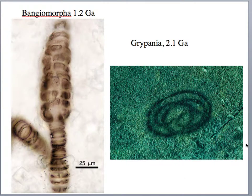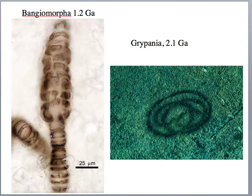Some of the oldest eukaryotic cells we find are Bangiomorpha, which are multicellular eukaryotic cells about 1.2 billion years old. An even older fossil at 2.1 billion years is Grypania, probably multicellular — the oldest known megafossil. It was probably a bacterium or some kind of algae, so probably a prokaryote. But certainly for the first eukaryote, Bangiomorpha at 1.2 billion years old is our first candidate.